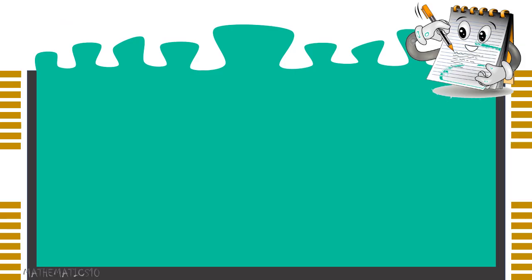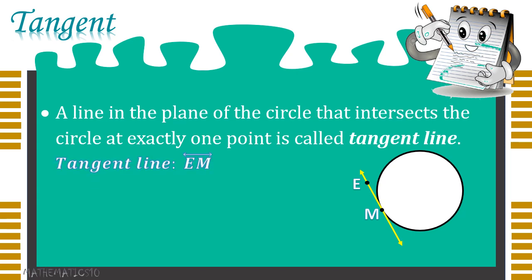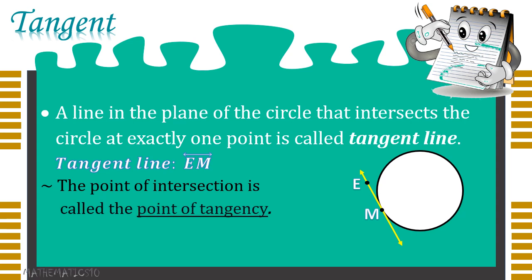Before we proceed with theorem 101 and 102, we need to be particular first with what is a tangent or tangent line. It's a line in the plane of the circle that intersects the circle at exactly one point. Given this illustration, you can see that line EM intersects a circle, and we can consider line EM as our tangent line. Line EM intersects the circle at exactly one point, and that point is considered the point of tangency.